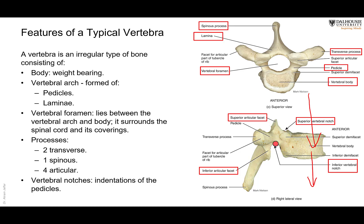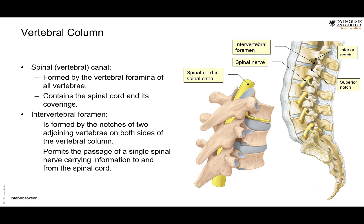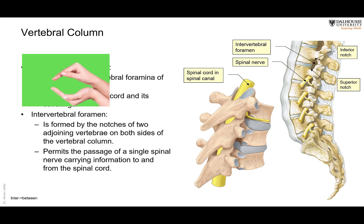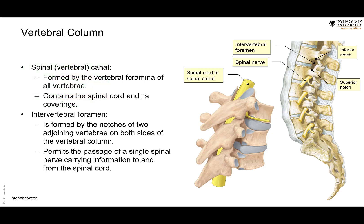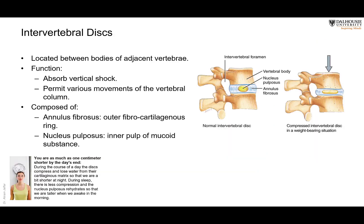The pedicle has a notch. When two vertebrae are brought together, the notch from the vertebra above and the notch from the vertebra below face each other, forming a foramen. This is called the intervertebral foramen — it is not a hole in a single bone, but is created by two notches in adjacent bones coming together. It is through the intervertebral foramen that spinal nerves exit the spinal cord and are distributed throughout the body.